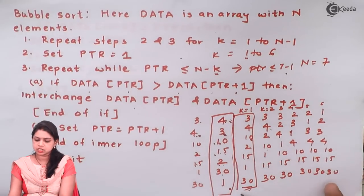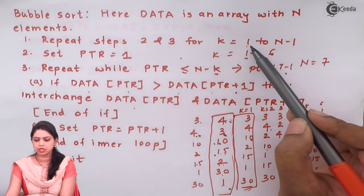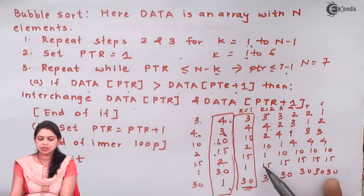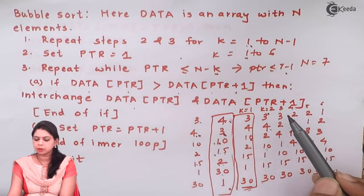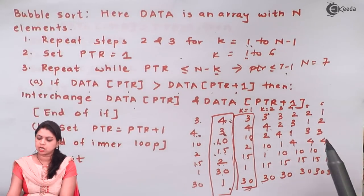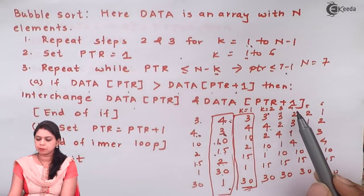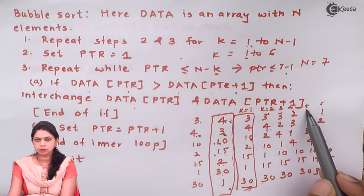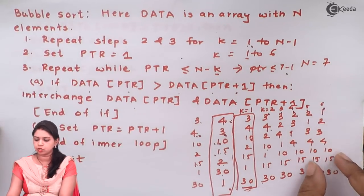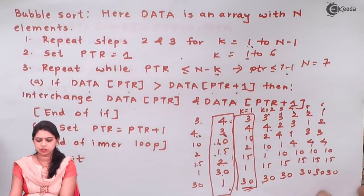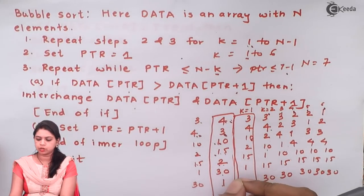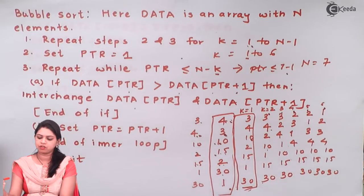After the first pass, we increment k by 1 to get k equal to 2. We keep repeating the same process, incrementing k at the end of each pass: k becomes 3, then 4, then 5, and when k becomes 6 we get the fully sorted list at the end of that iteration.